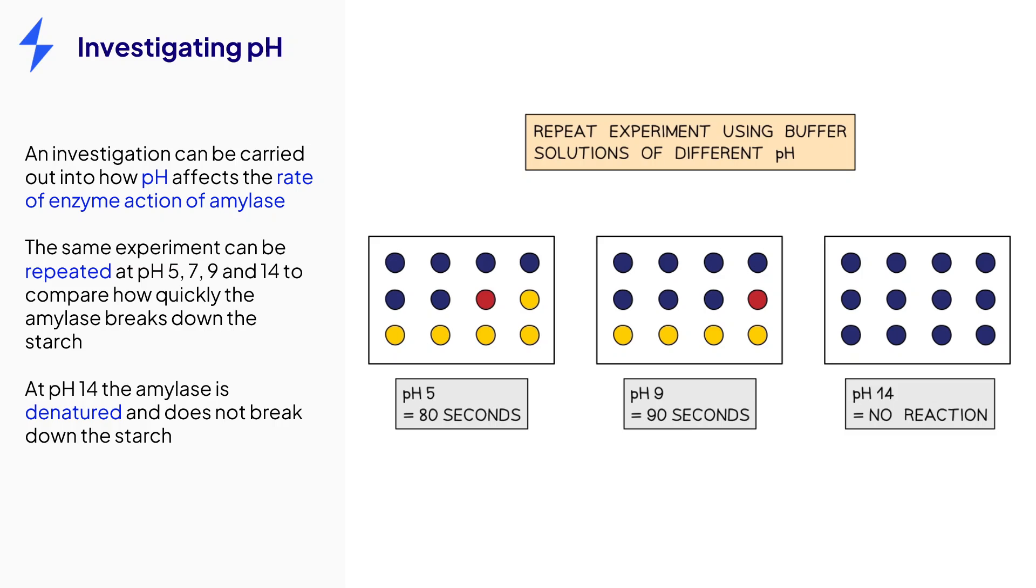If the experiment was repeated at a much lower pH, such as pH-2, the amylase would also have denatured. Remember that this experiment was just for amylase. If this experiment was repeated with a different enzyme, the results may have been varied due to the different enzymes having different optimum pH values.